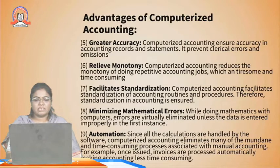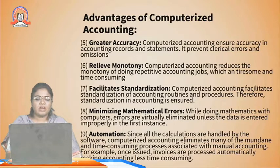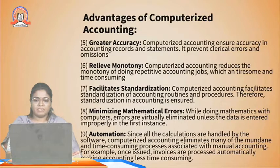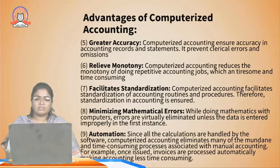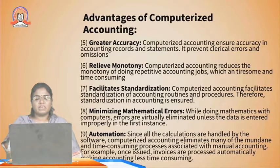Minimizing mathematical errors: manual calculation errors are reduced in the computerized accounting system. Automation: since all calculations are handled by the software, automatic calculation takes place. Time-consuming processes associated with manual accounting are eliminated — for example, once issued, invoices are processed automatically, making accounting less time-consuming.